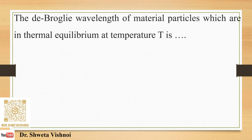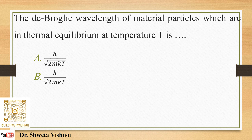The de Broglie wavelength of a material particle in thermal equilibrium at temperature T is: (A) H upon √(2MKT), (B) H_cross upon 2MKT, (C) H_cross upon √(MKT), (D) H upon √(2KT).